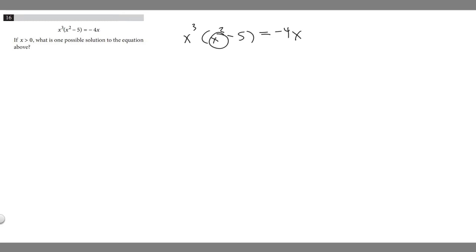And so what we want to do to solve this is the first thing that we should do is just expand it. So we have this x cubed times x squared minus 5. So if you ever see something like that, just multiply it out and try and simplify it.